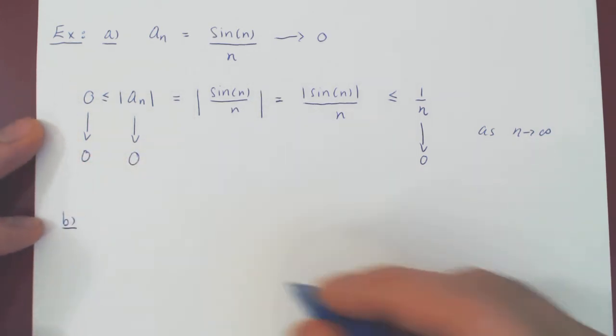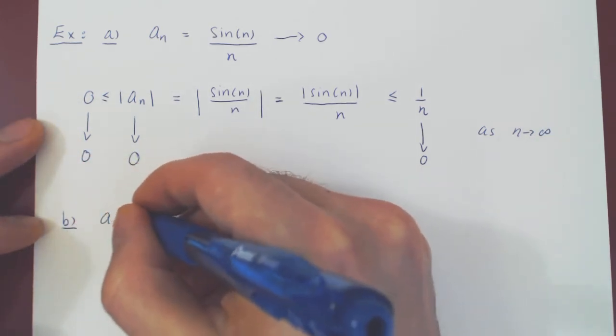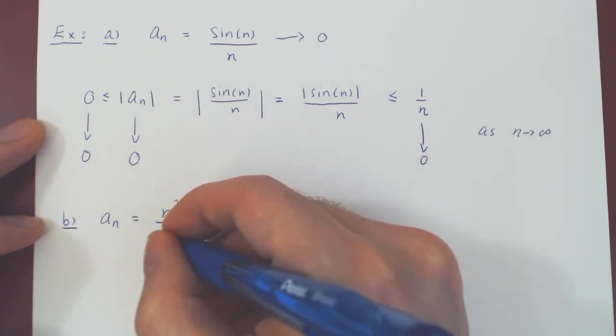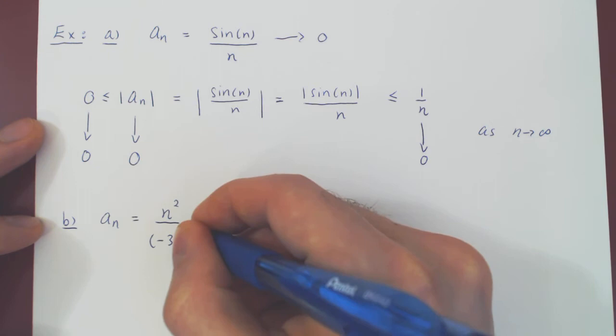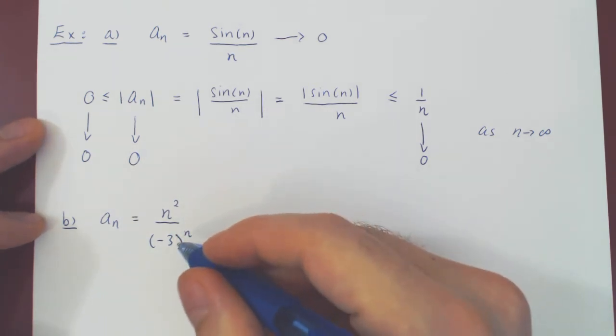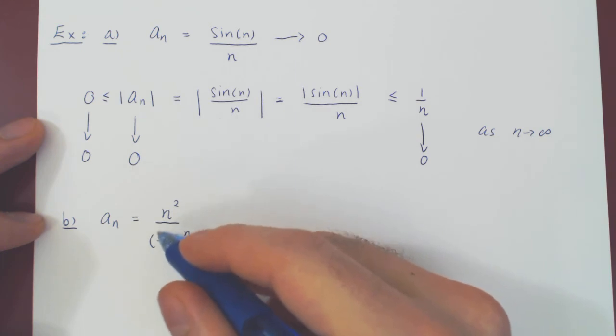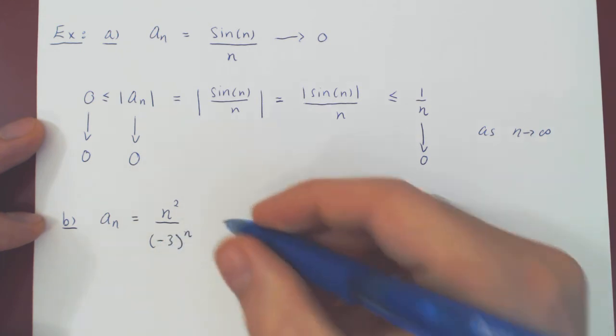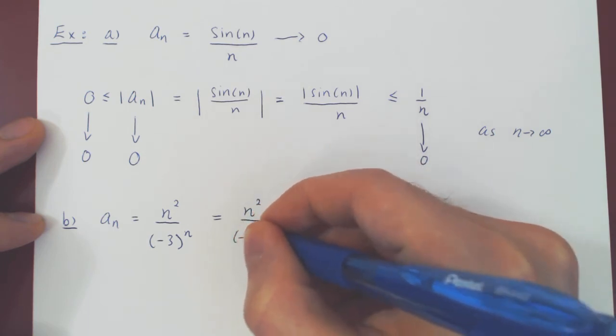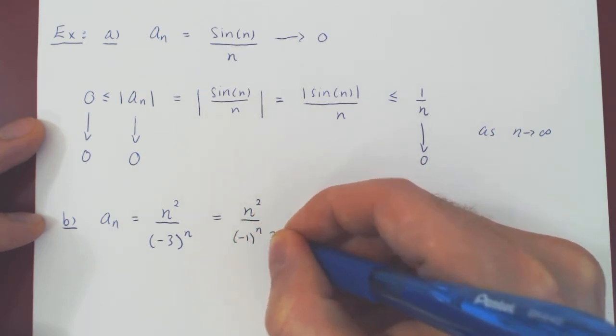Let's look at one other example, where a_n here is n squared over negative 3 to the n. Now here, if you split up the negative 1 times 3 to the n, you'll get n squared over negative 1 to the n, 3 to the n.